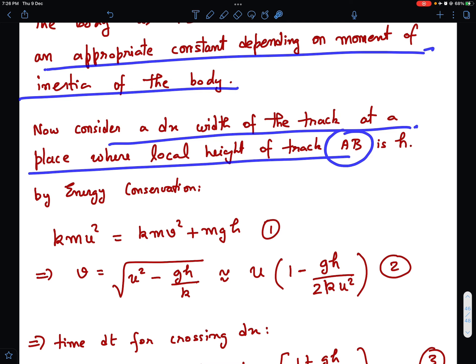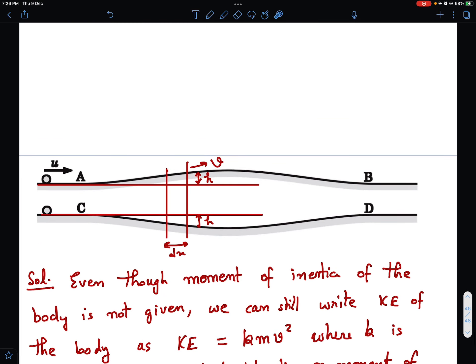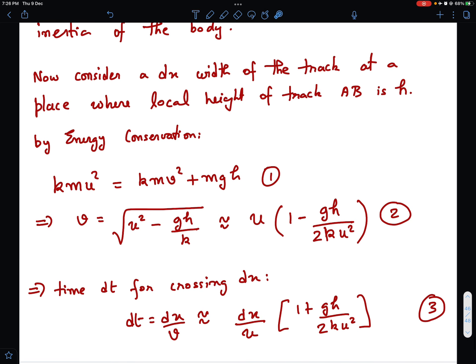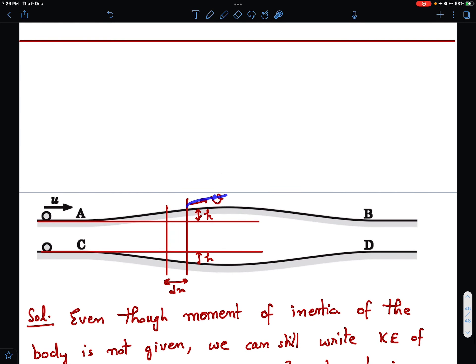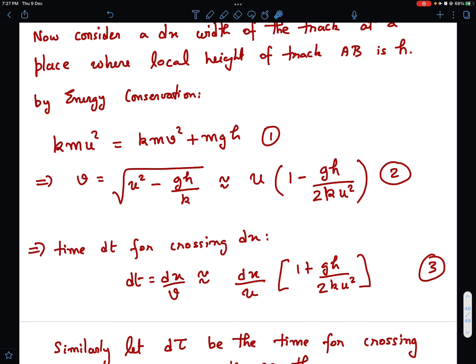Now, considering a width dx of the track at a place where local height of the track AB is H. So I am considering this point. This thickness is dx. And since the angle is small, so inclined thickness and horizontal thickness both can be taken as dx. And the height over here is H. So initial speed was u. And since it has gained some potential energy, the speed is going to be a little less. By energy conservation, we can say that initial kinetic energy k·Mu² must be equal to k·Mv² + Mgh. Here V is the speed at this point and u was the speed here and this is the height H.